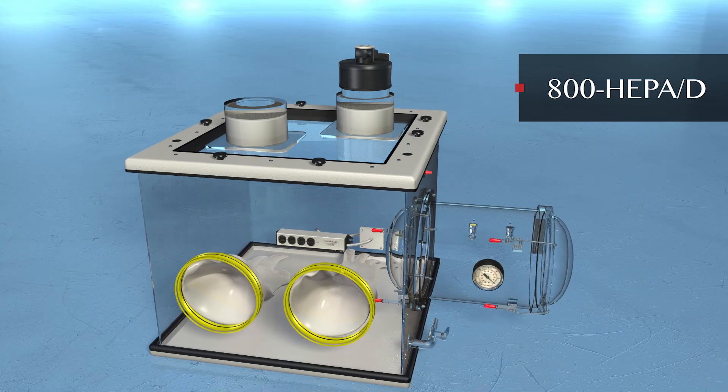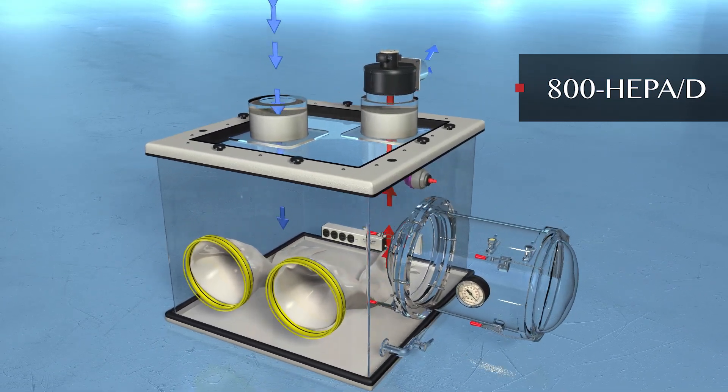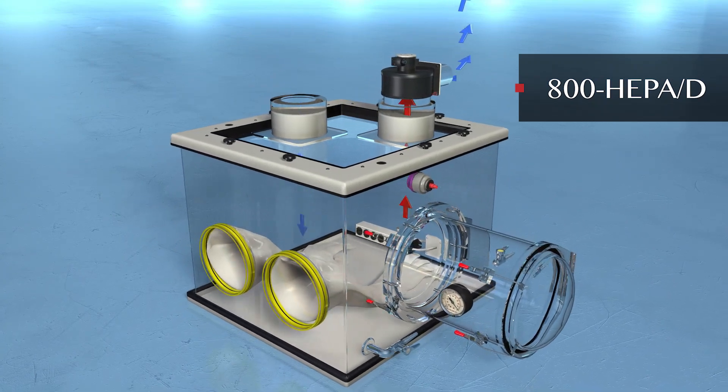800 HEPA D. Double HEPA filtration system provides HEPA filtered air into and out of the glove box.